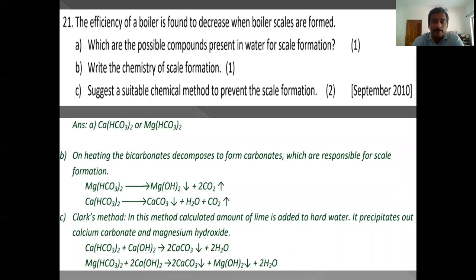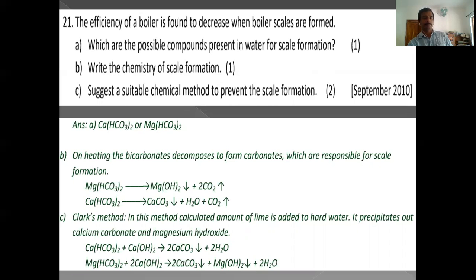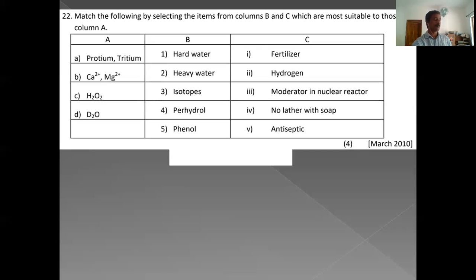A suitable chemical method to prevent scale formation is removal of hardness. During boiling, if bicarbonates are present (Ca(HCO3)2 and Mg(HCO3)2), they decompose and deposit as calcium carbonate or magnesium carbonate. Match the following: Protium is an isotope of hydrogen. Isotopes of hydrogen: protium (1H1), deuterium (1H2), tritium (1H3).